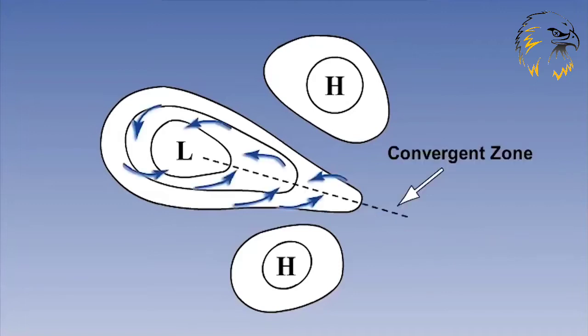Trough weather can be as active, and occasionally even more active, than that of a main depression. Looking at the diagram, the surface winds tend to converge along the trough line.